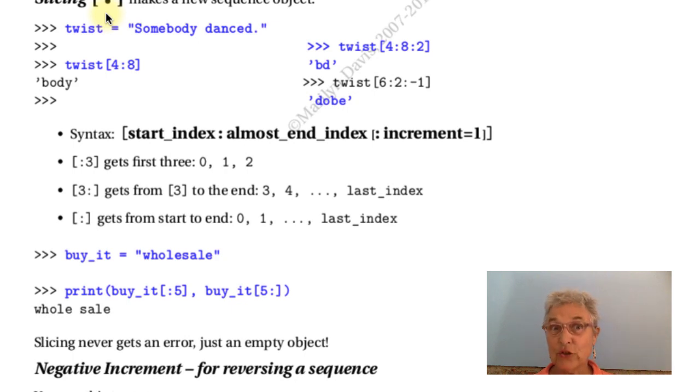Slicing is very interesting and useful. It's like accessing, but it has a colon in it. Square brackets with a colon in it and possibly two integers. So here I have a string, and when I ask for the slice from four to eight, we start at four. It does not go into the answer. I get a new string with those elements in it. That's slicing.